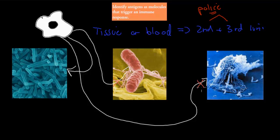That's what we're going to cover in this video. We're going to cover this syllabus dot point, which says: identify antigens as molecules that trigger the immune response. You need to know that antigens are molecules that help us identify cells that are not our own, and thereby trigger the immune response.